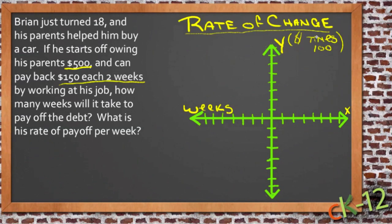So we'll know that obviously when he hasn't done anything yet, he hasn't paid off any money, he hasn't worked. So we actually have a point at 0,0. If he hasn't worked at all, he hasn't worked any weeks and he hasn't earned any money.